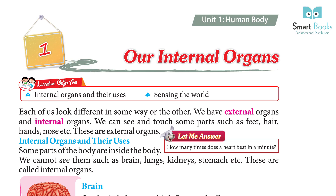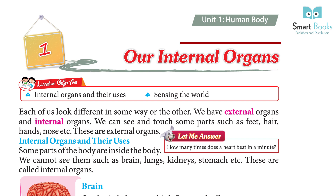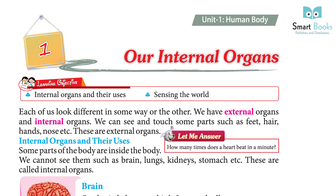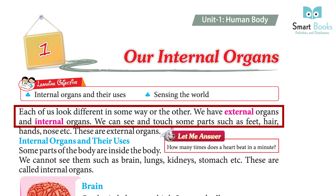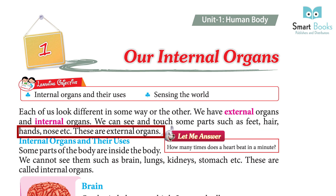Chapter 1, Unit 1: Human Body. Our internal organs. Learning Objective: Internal organs and their uses, and sensing the world. Each of us look different in some way or the other. We have external organs and internal organs. We can see and touch some parts such as feet, hair, hands, nose, etc. These are external organs.